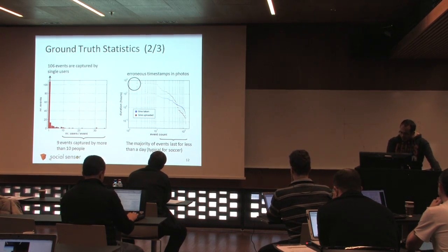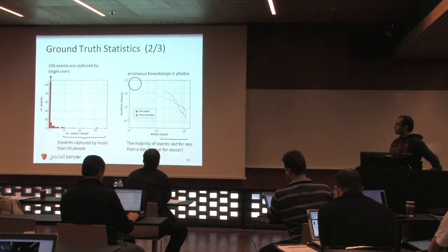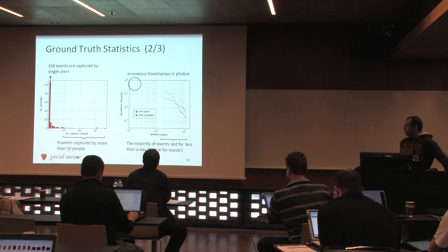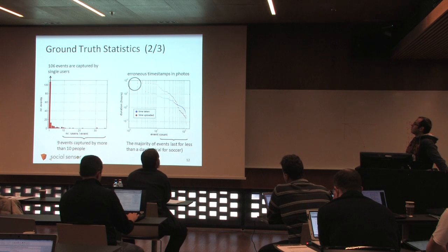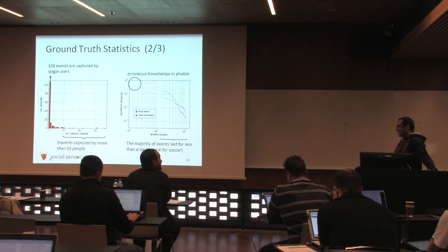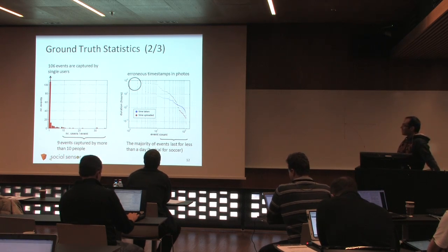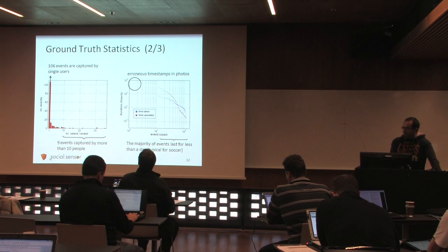Here is another further statistical analysis of the ground truth. We have 106 events that are captured by a single user, and only nine events that are captured by more than 10 people. Most of these events are actually the Indignados movements, which seem to be well covered in Flickr. We also made a plot of the duration of the events. Of course, this is just a rough estimate because the photos of the event do not necessarily capture the whole duration of an event. But even this was helpful because it allowed us to spot some errors in the metadata. For instance, in the case of a technical event, there was a photo with a deviation in time of more than one year. That means that methods that rely on time will probably miss such kinds of photos. We can see that most events, especially soccer events, last for just a few hours.